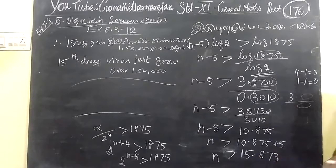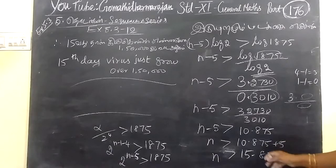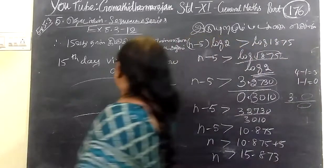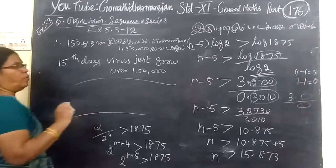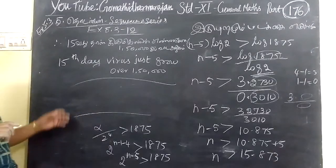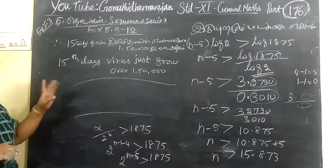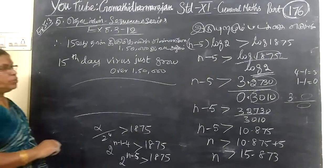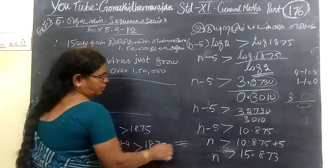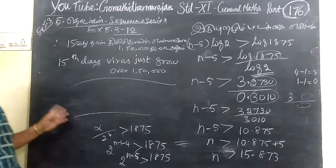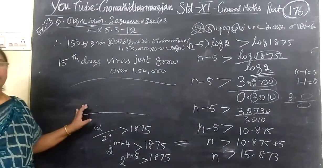So, 15.873 is the result. That is, on the 16th day, virus will grow over 1,50,000. So, the answer is 16. This is the solution. And we will do the next test in the next lecture.